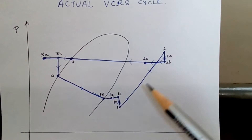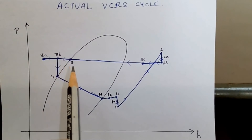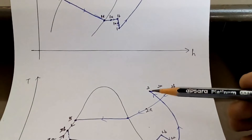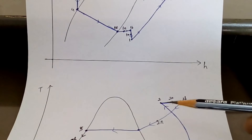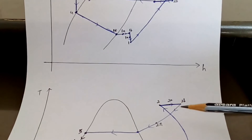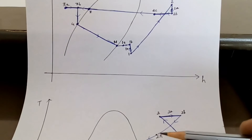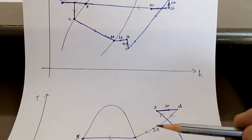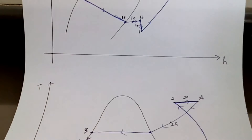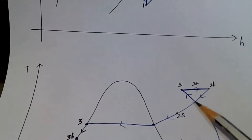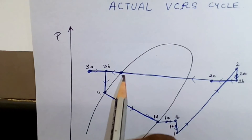From 2c to 3 there is heat rejection in the condenser at constant pressure. The temperature remains constant from 2 to 2a to 2b, then drops from 2b to 2c during desuperheating. From 2c to 3 is the constant-pressure heat rejection line.